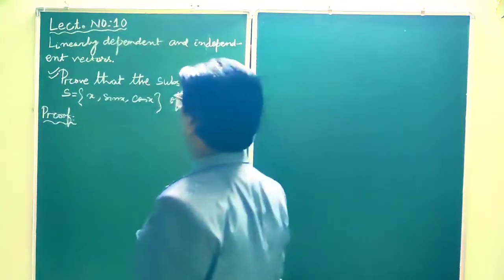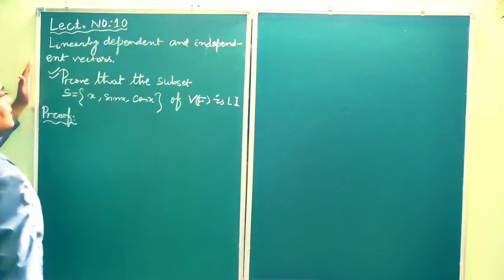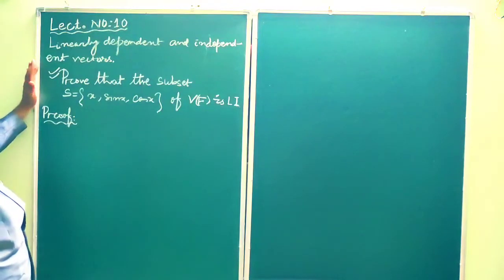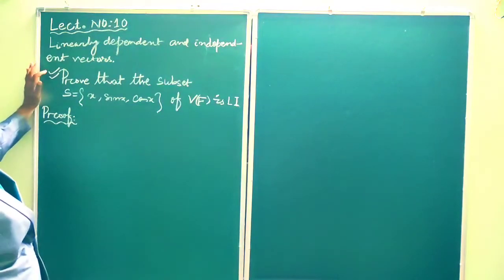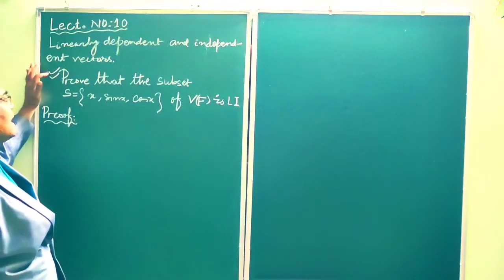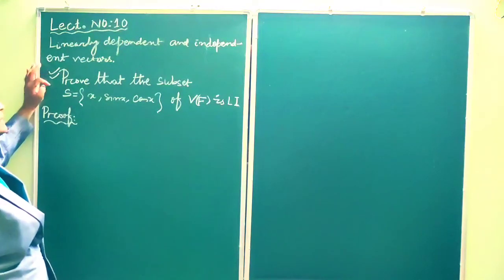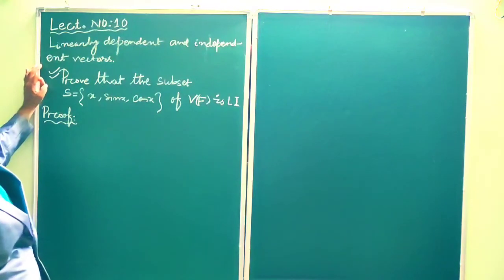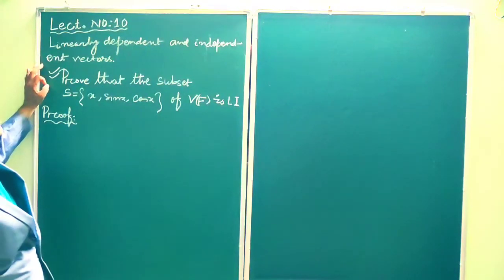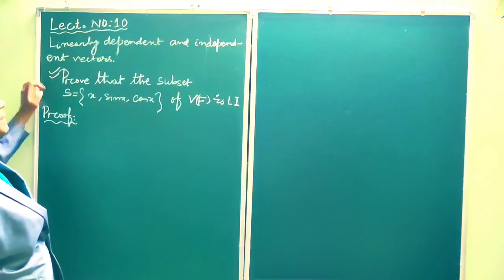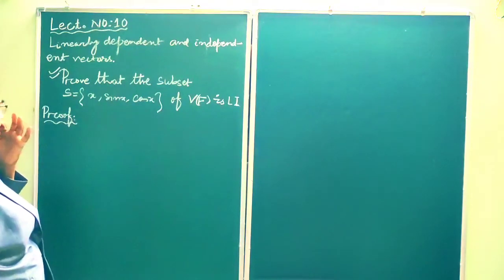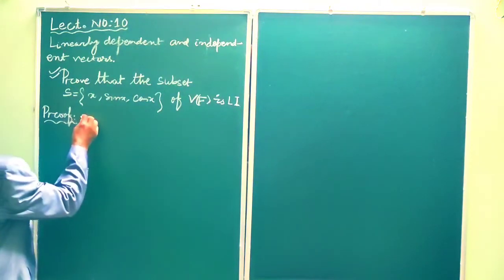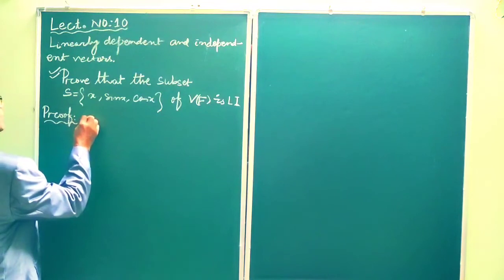The question is: prove that the subset S = {x, sin x, cos x} of V(F) is linearly independent.